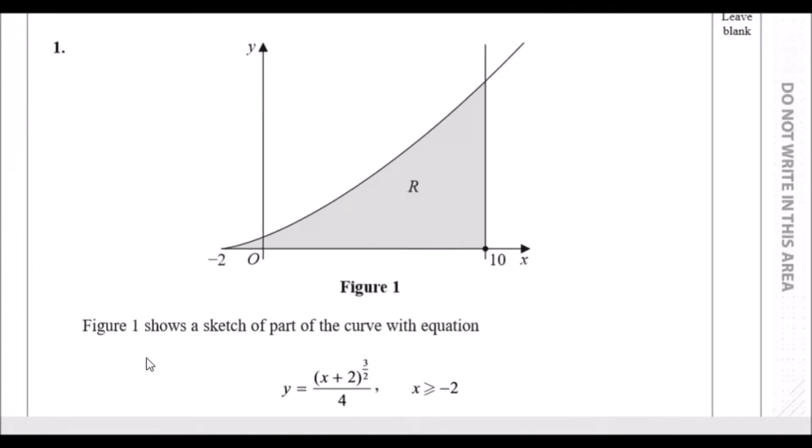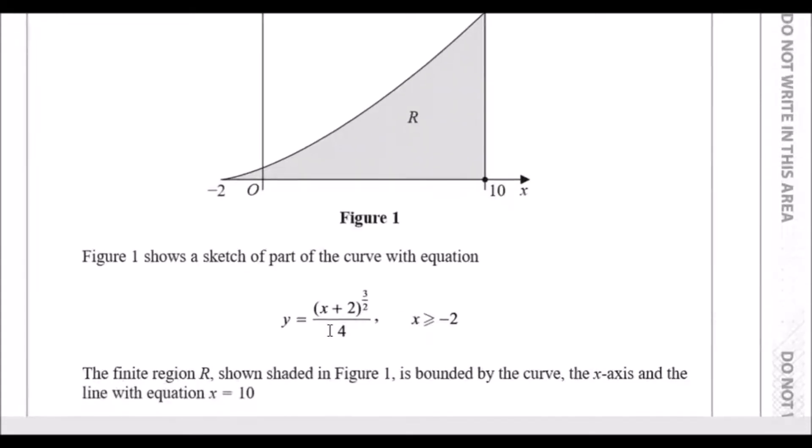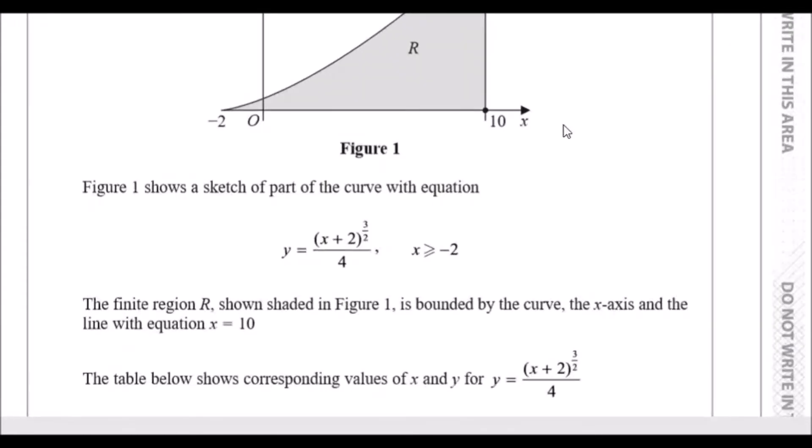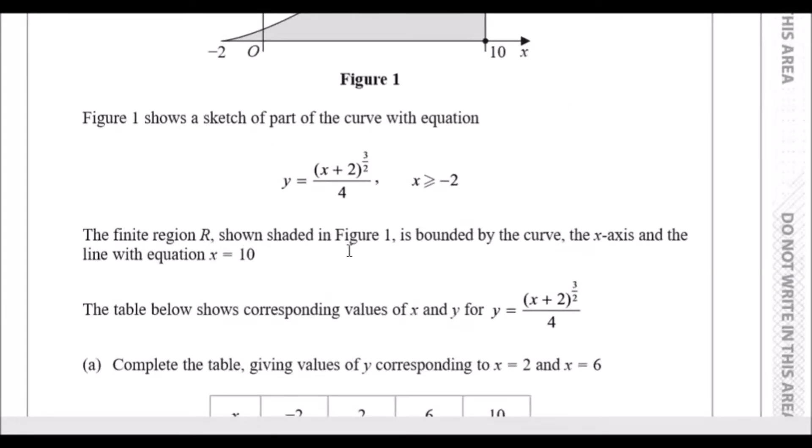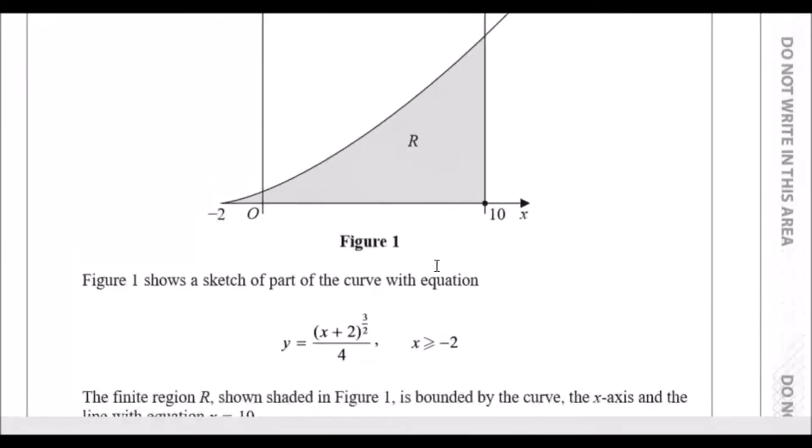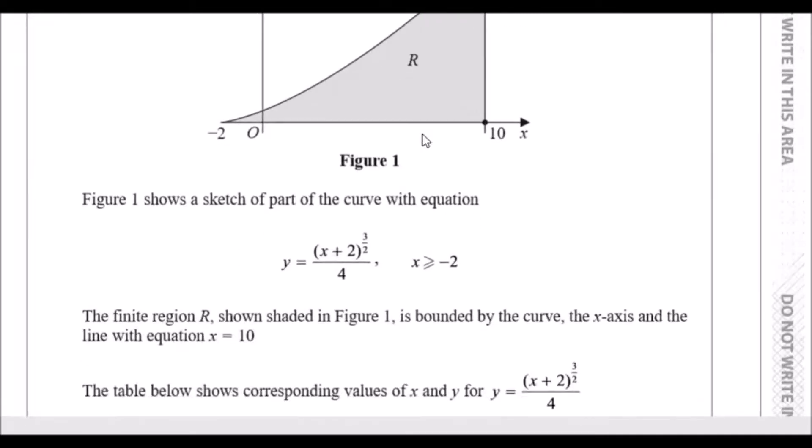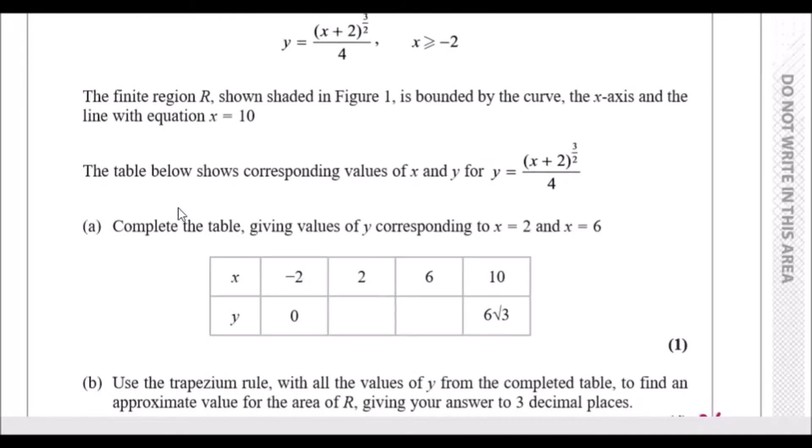Figure 1 shows a sketch of part of a curve with equation y = (x+2)^(3/2)/4, where x ≥ -2. The finite region shown shaded in Figure 1 is bounded by the curve, the x-axis, and the line x = 10.